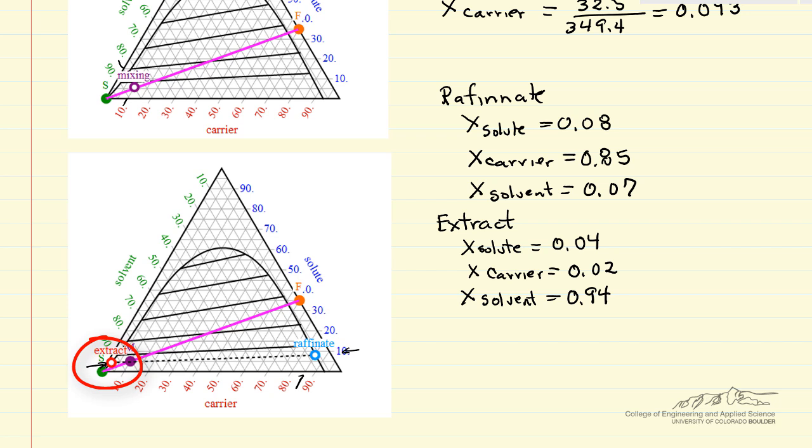And now we can do a mass balance to determine what the flow rates of the raffinate, the extract are, and the mass balances are, of course, that the total amount leaving must be the total amount entering, and so R plus E equals the 349.4 that we calculated earlier for the total amount.